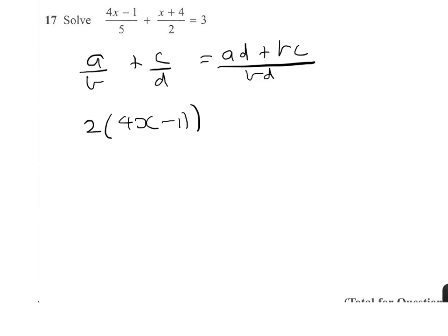We then have to do the bc, which is 5 times x plus 4. And as it's plus, we keep the plus in the middle. So 5 lots of x plus 4.